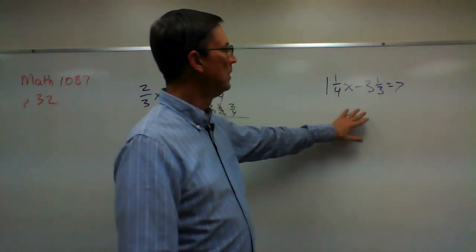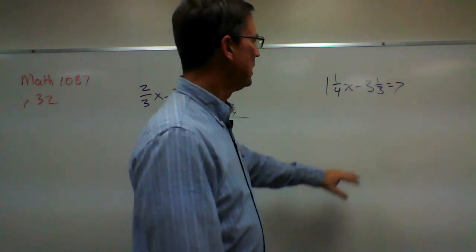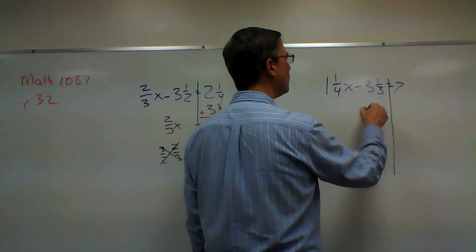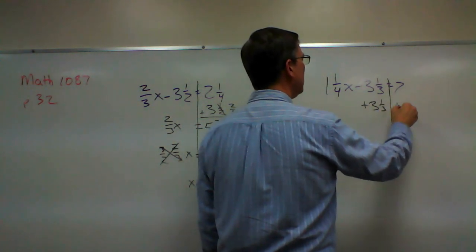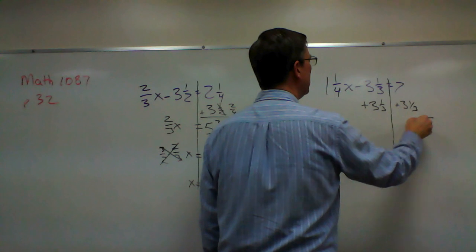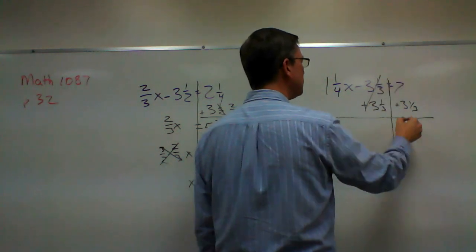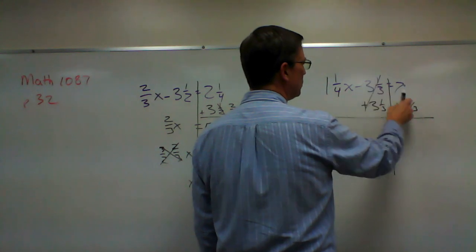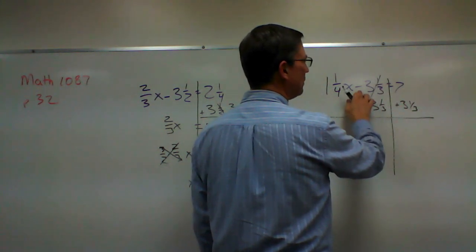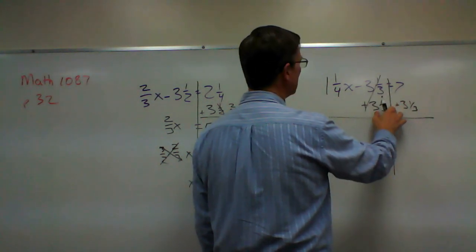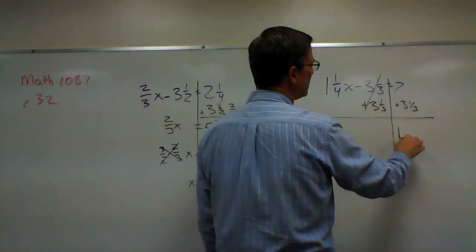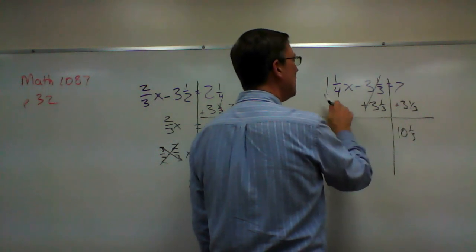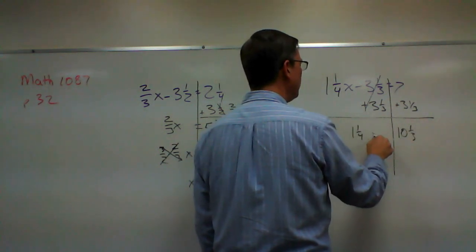Let's look at this other problem that's on the page. Again, we'll start off in a similar way. We'll draw a line. We're going to add three and one third to both sides, so that'll cancel, or you can just move it over and it changes to the opposite side, so it goes from being negative to positive. So this easily becomes ten and a third—you can see seven plus three is ten—ten and a third, and we have one and one fourth x.